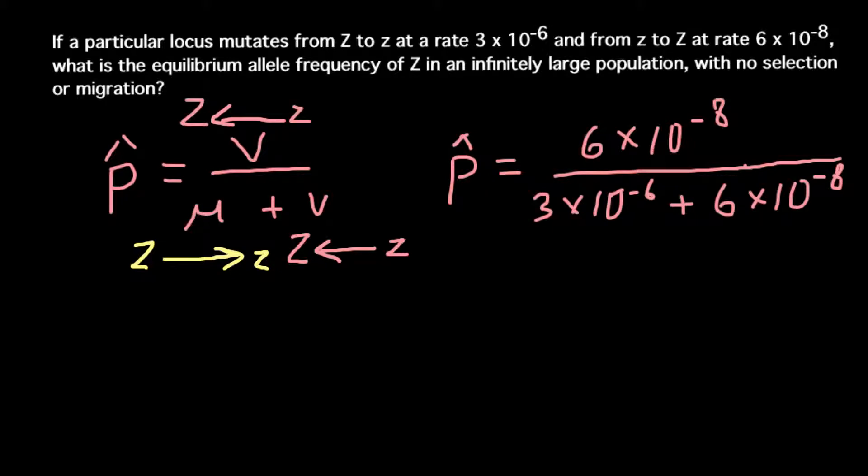Because this number is greater than this number, at the end we should have more small or recessive z alleles in our gene pool than dominant alleles, capital Z.